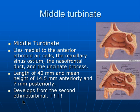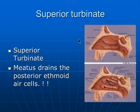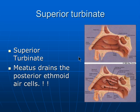The middle turbinate develops from the second ethmo-turbinal bridge. The superior turbinate is by far the smallest one, lying superiorly and posteriorly. The area below each turbinate is called the meatus — we have the superior meatus, the middle meatus, and the inferior meatus. The superior meatus drains the posterior ethmoid air cells.